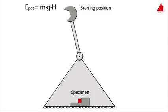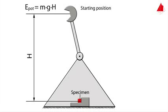Here is the main principle of the measurement. In its starting position, the pendulum only has potential energy. It is given by mass of the hammer, m, times gravitational acceleration, g, times starting height, H.